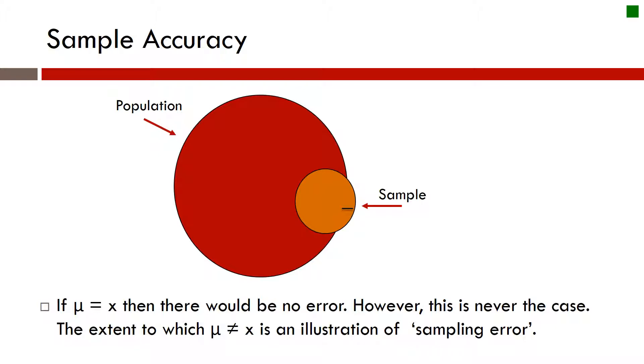Just as some illustrations here, we talk about sample accuracy. We know that the population here, we assume that our sample is drawn from our population. However, this is never really fully the case. Our sample is never perfectly going to reflect the population of interest.